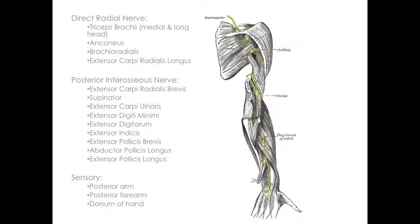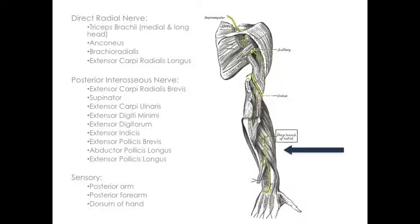As a terminal branch of the posterior cord, the radial nerve enters the posterior compartment of the arm and innervates the medial and long head of the triceps. At the lateral aspect of the arm proximal to the olecranon, the radial nerve turns lateral and innervates the anconeus, brachioradialis, and extensor carpi radialis longus. Thereafter the nerve splits; its motor branches continue to innervate the extensor musculature of the forearm, while the sensory branches provide sensation to the back of the hand.